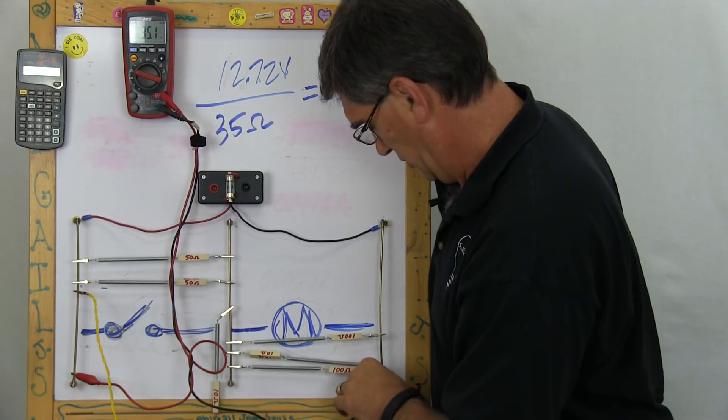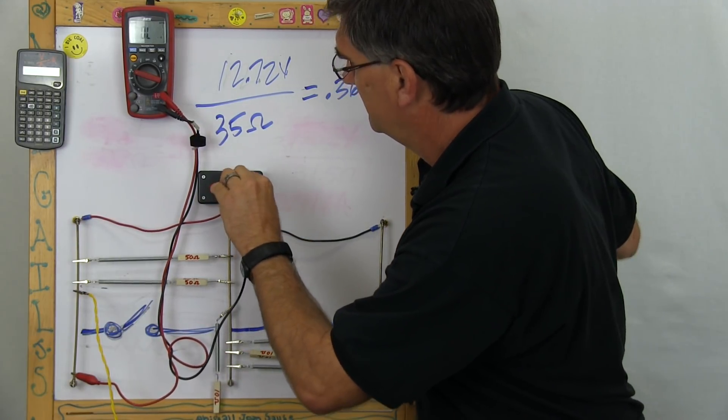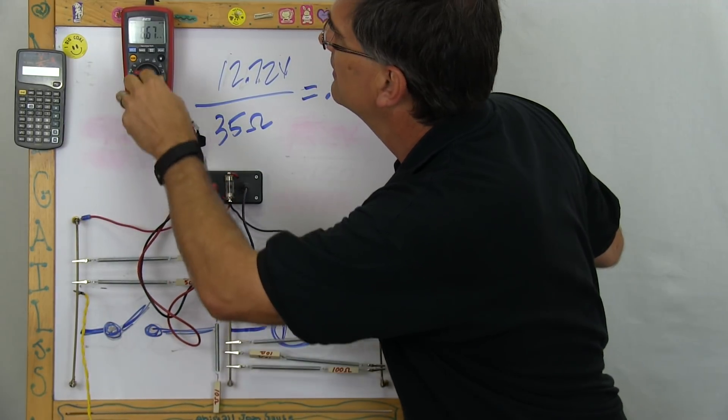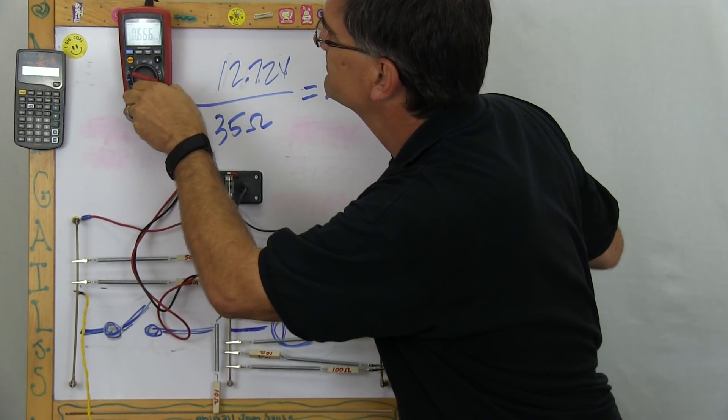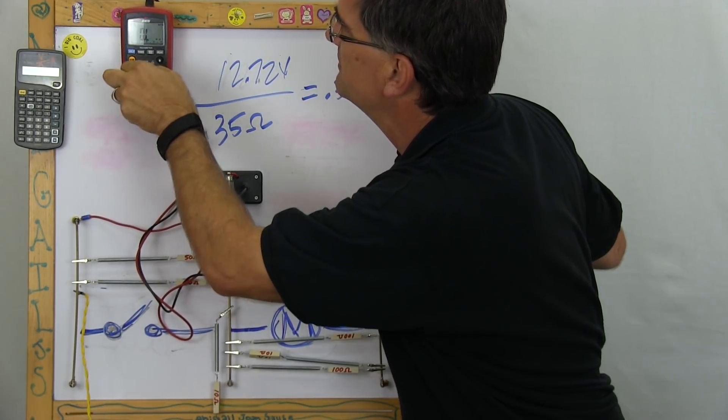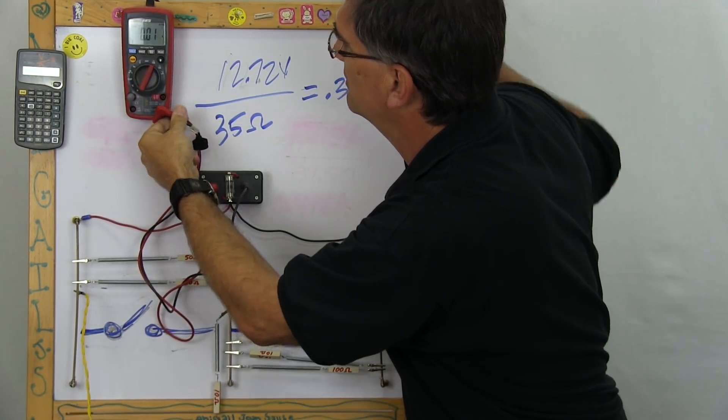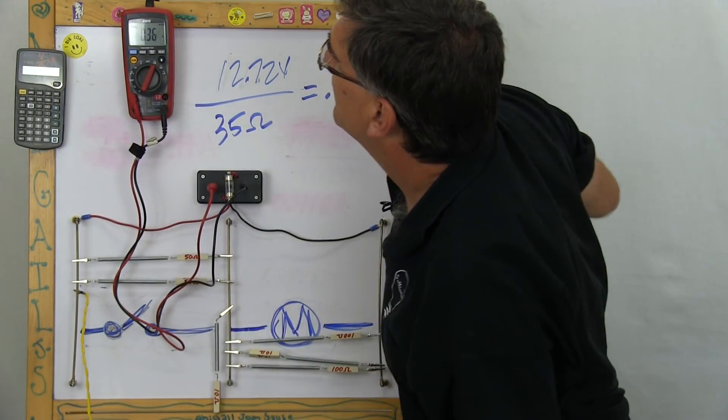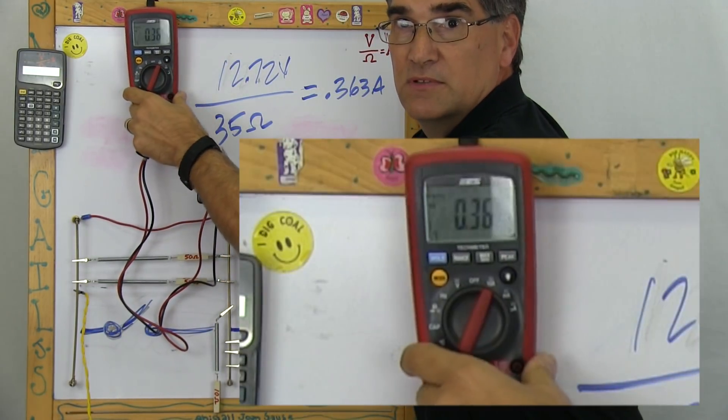And then, we put the meter back in the switch box here, and we go to amps. We flip the meter to amps. See, they're learning how to use the meter here as well. And we get .36.